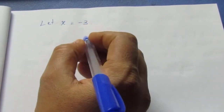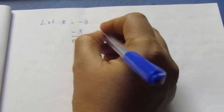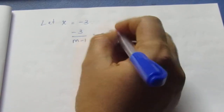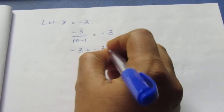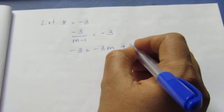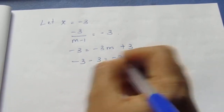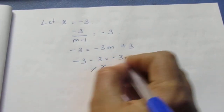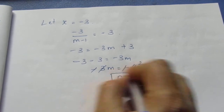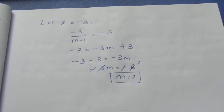Let x = -3. Then -3/(m - 1) = -3, so -3 = -3m + 3, giving -3m = -6, so m = 2. Both x = -3 and m = 2 are integers, so this is valid.